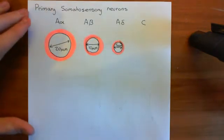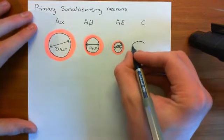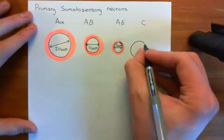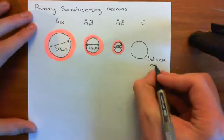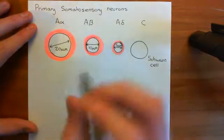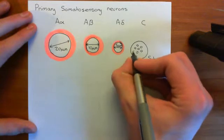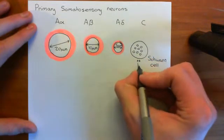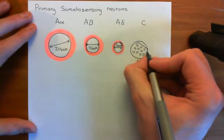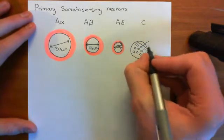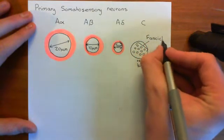C-fibres are much, much smaller. They have a diameter of around 1 micrometre and they don't have a myelin covering. You have multiple C-fibres running through the same Schwann cell, which will not coat them in myelin — so they're unmyelinated. These little C-fibres run together through the same Schwann cell, and when you have a collection of C-fibre axons running through a single Schwann cell like this, it's called a fascicle — a single fascicle of C-fibres.